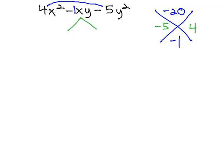This is how we will split the middle term, but notice this time the middle term has xy on it. That means our negative 5 will have xy, and so will the 4. We now have 4x squared, minus 5xy, plus 4xy, minus 5y squared.